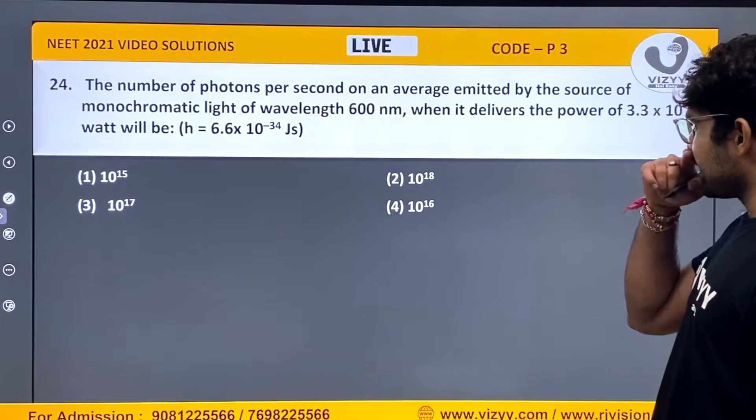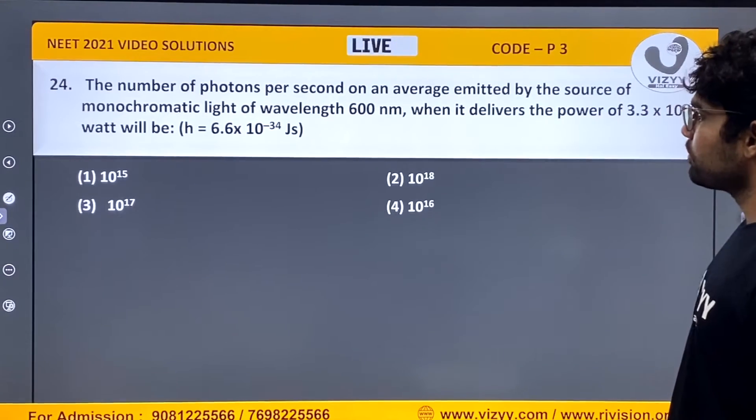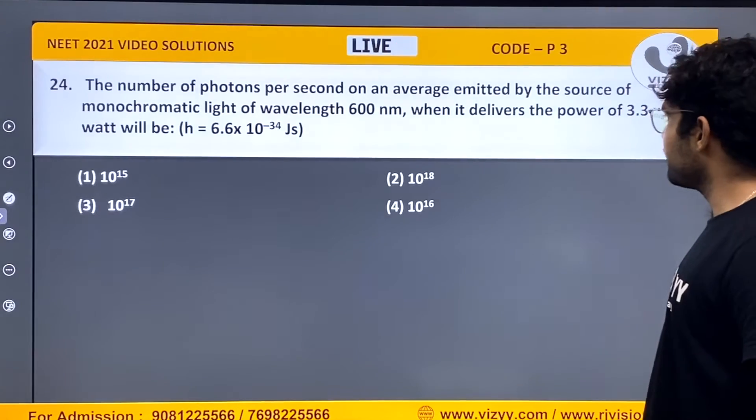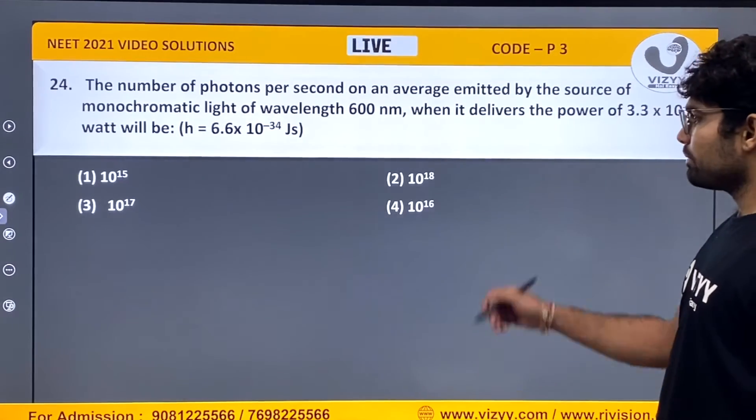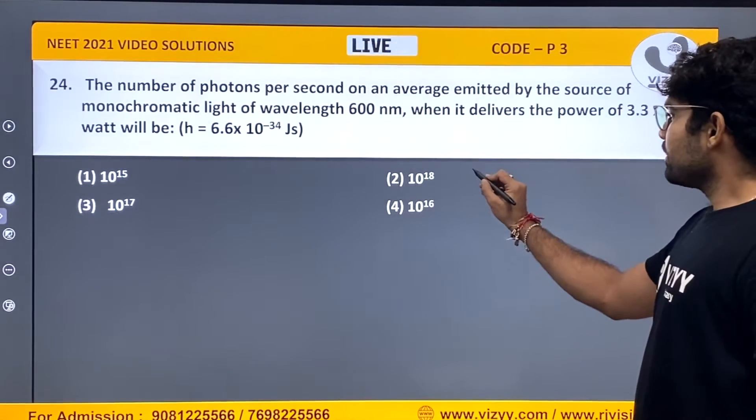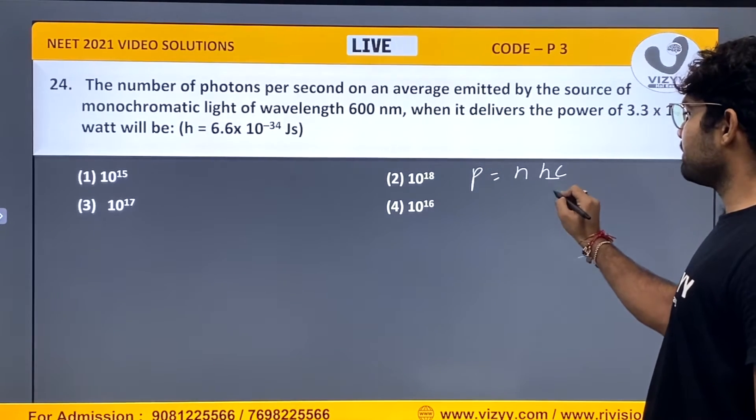The number of photons per second on an average emitted by the source of monochromatic wavelength 600 nanometer that delivers the power. Let's say number of photons per second.